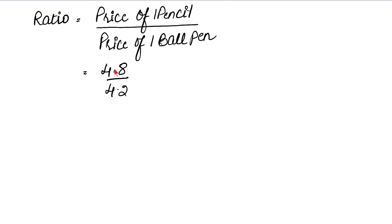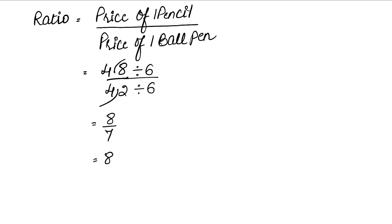The decimal point cancels one digit. Now we find the number by which both 48 and 42 are divisible — that is 6. Six eights are forty-eight and six sevens are forty-two. So the ratio of the price of a pencil to the price of a ball pen is 8 is to 7.